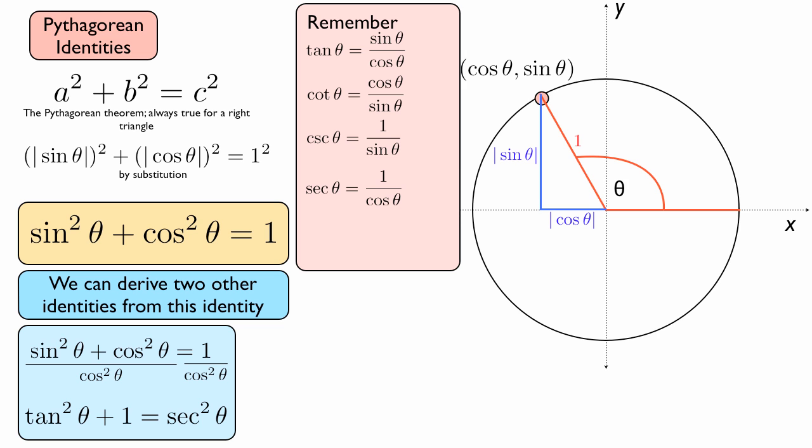So if you're able to divide each of the terms of the original Pythagorean identity by cosine squared theta, you'll be easily able to find out this new formula, which is tan squared theta plus 1 is equal to secant squared theta.